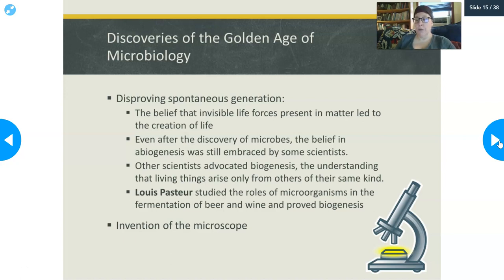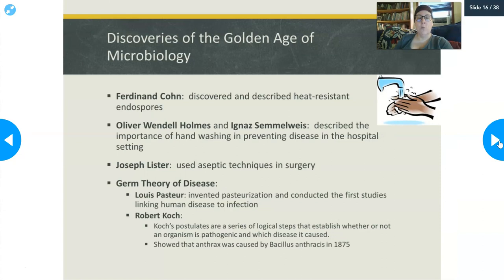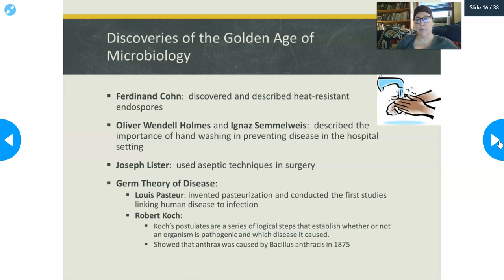Then there was the invention of the microscope — Antonie van Leeuwenhoek — which began the discovery of all these little creatures we cannot see with the naked eye. Ferdinand Cohn described heat-resistant endospores, which was another advance in microbiology. If you're in the healthcare field, you'd be familiar with C. diff infections. C. diff can make spores that resist harsh environments for a very long time, but once a spore gets into you and finds a favorable environment, it exits the spore form and becomes capable of growing and causing infection.